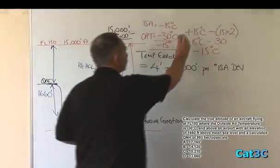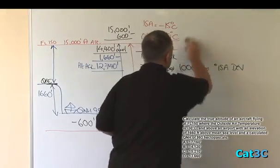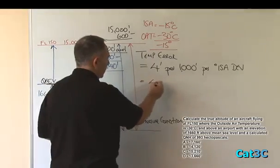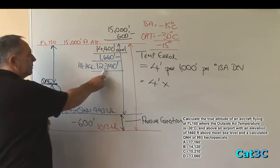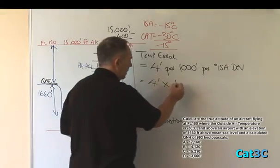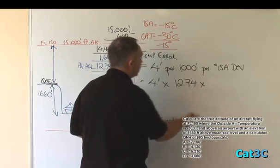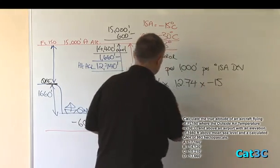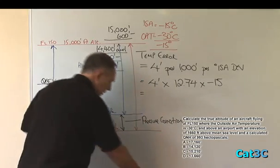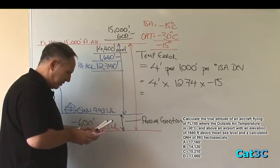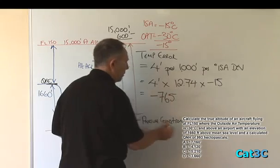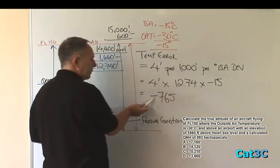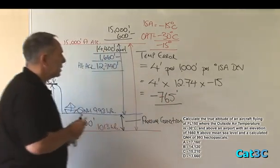Clear a bit more of this board off. So putting some values into this formula. 4 feet multiplied by numbers of thousands of feet. We use the height above ground level. So 12,740 divided by 1,000 is 12.74 multiplied by minus 15. If we multiply those numbers together on the calculator, we find 4 times 12.74 times minus 15 equals approximately 765 feet. However, as we have a minus value here, we carry it over to a minus value there. So that's the temperature error correction.